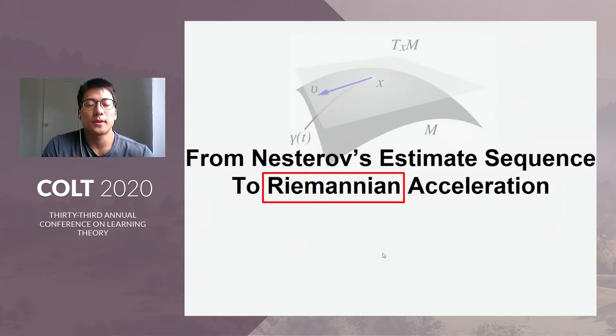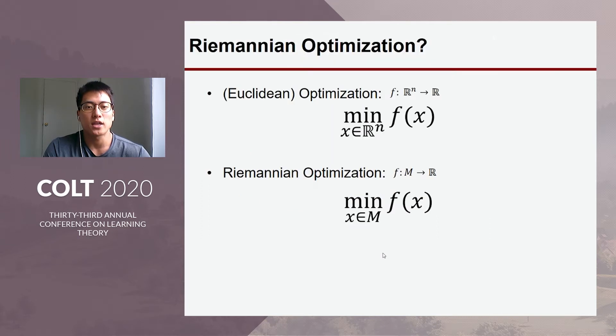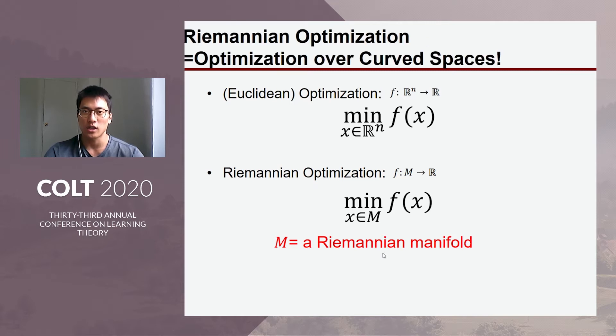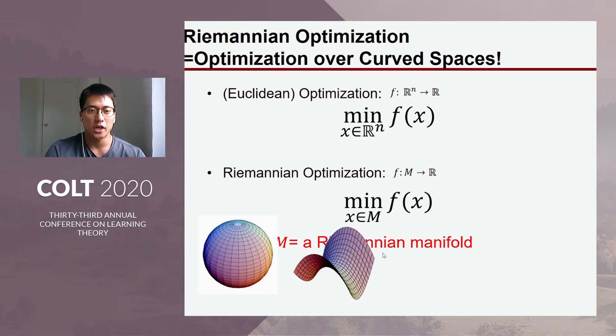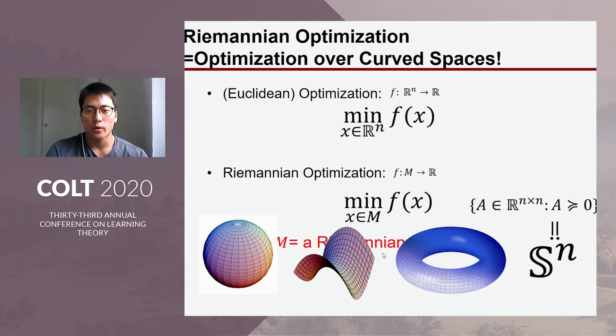Okay, so let me explain the terms in the title. First, Riemannian optimization is an optimization problem where the cost function's domain is in Riemannian manifold. For those who are not familiar with the concept of Riemannian manifold, you can just think of it as optimization over curved spaces. So spaces could be sphere, saddle, or torus, or more abstractly, space of matrices, matrix manifold.